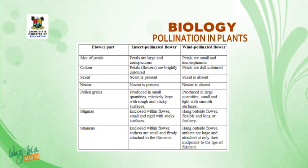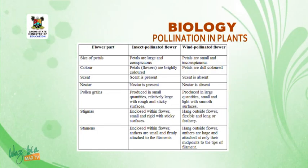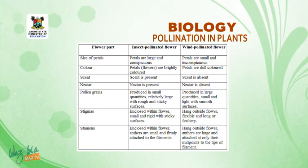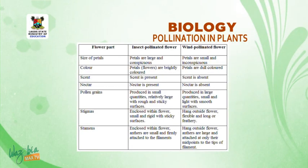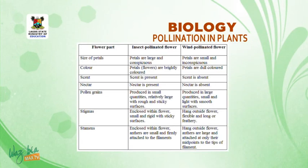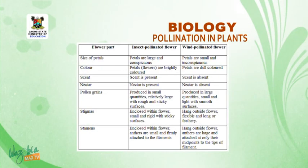Under pollen grains: insect-pollinated flowers produce pollen grains in small quantities; they are relatively large with rough and sticky surfaces. Wind-pollinated flowers produce pollen grains in large quantities; they are small and light, with smooth surfaces.